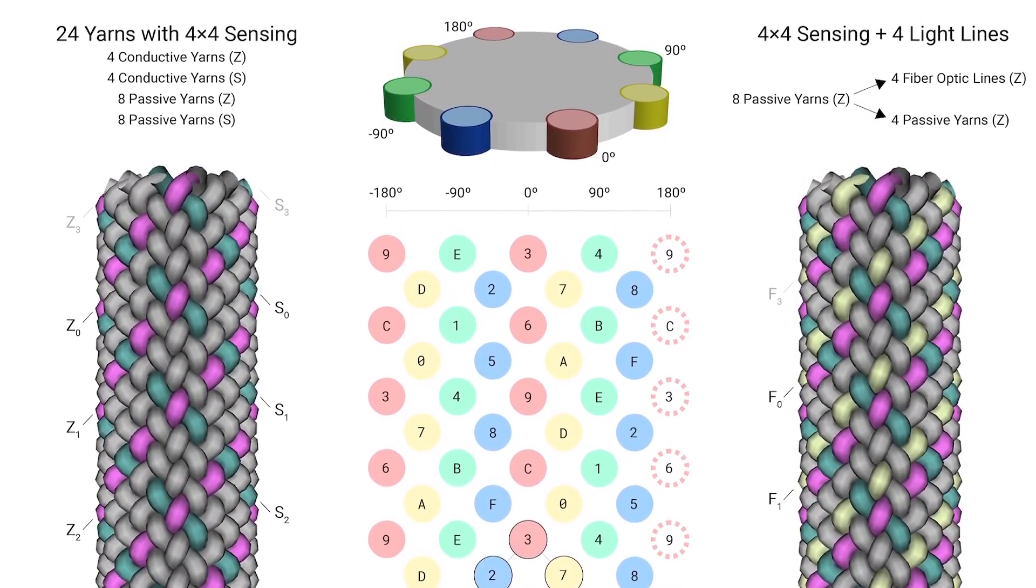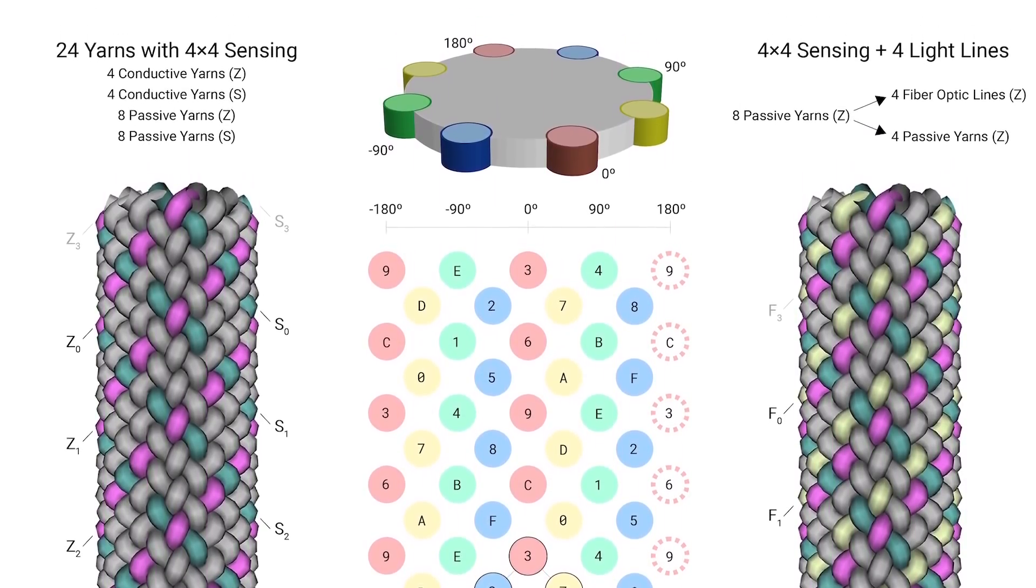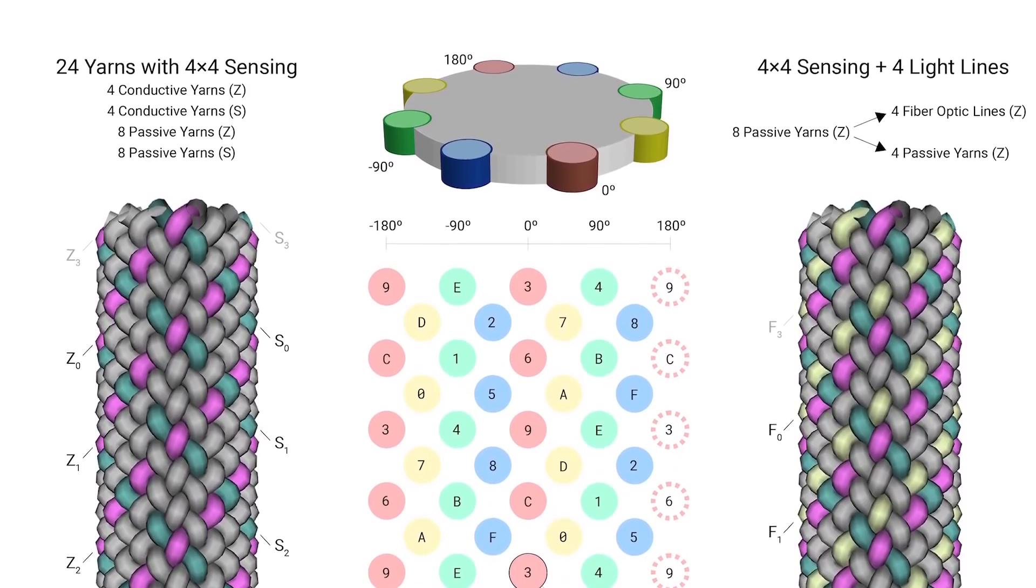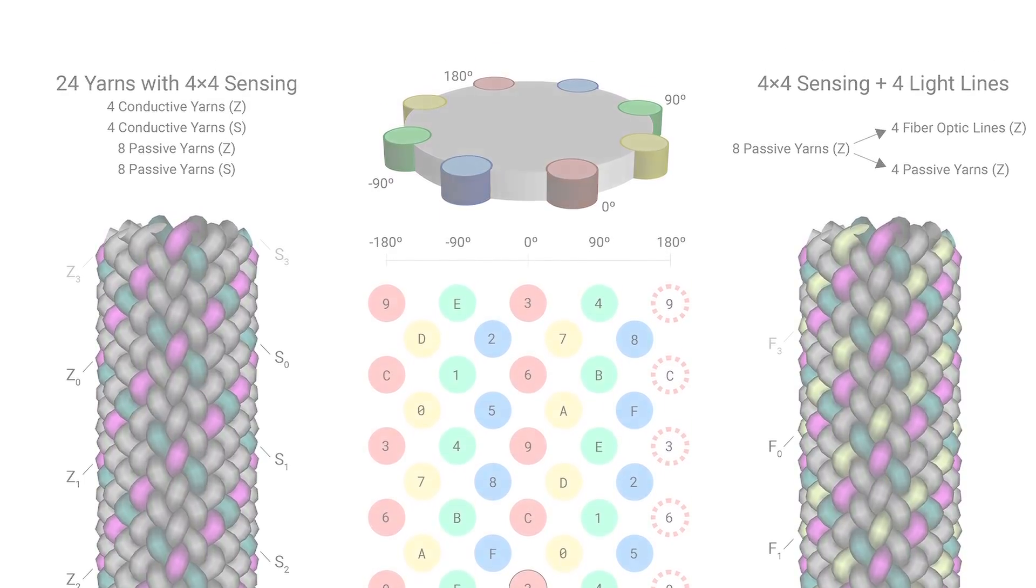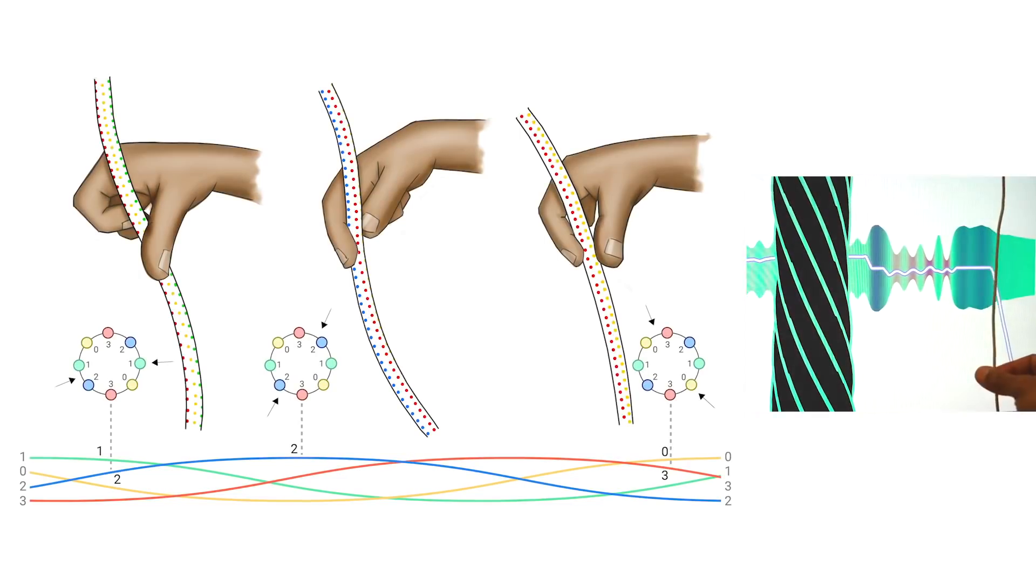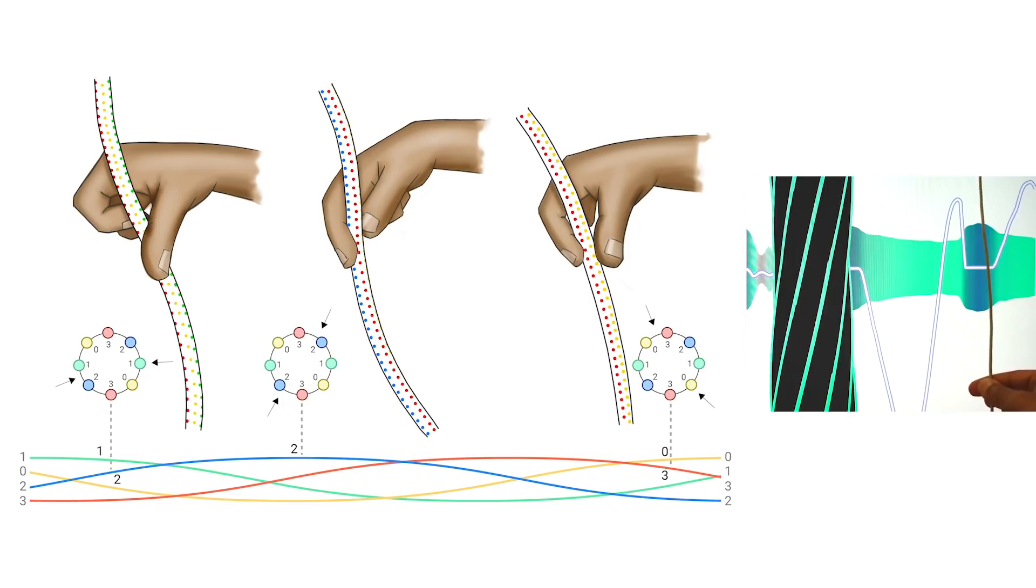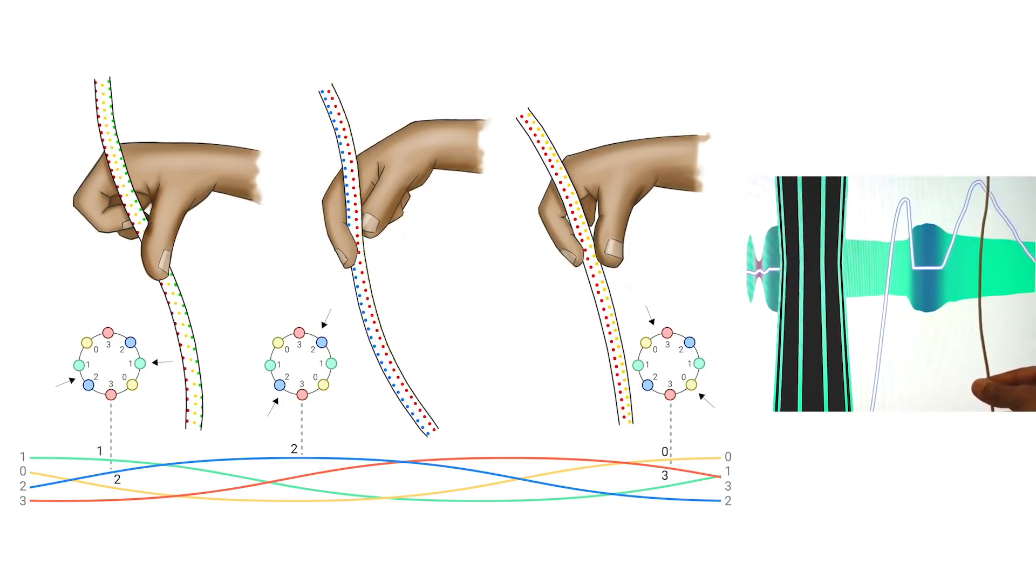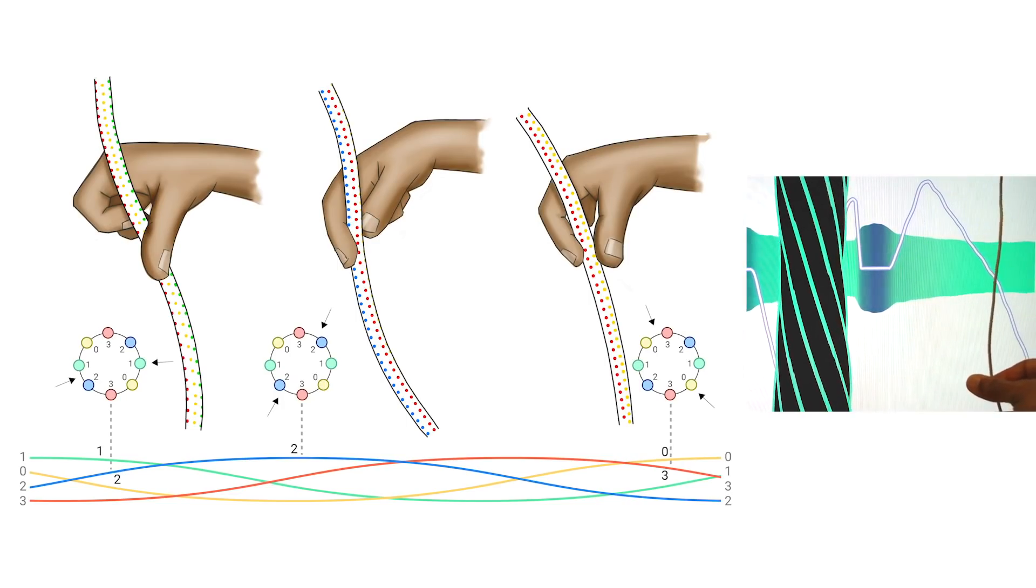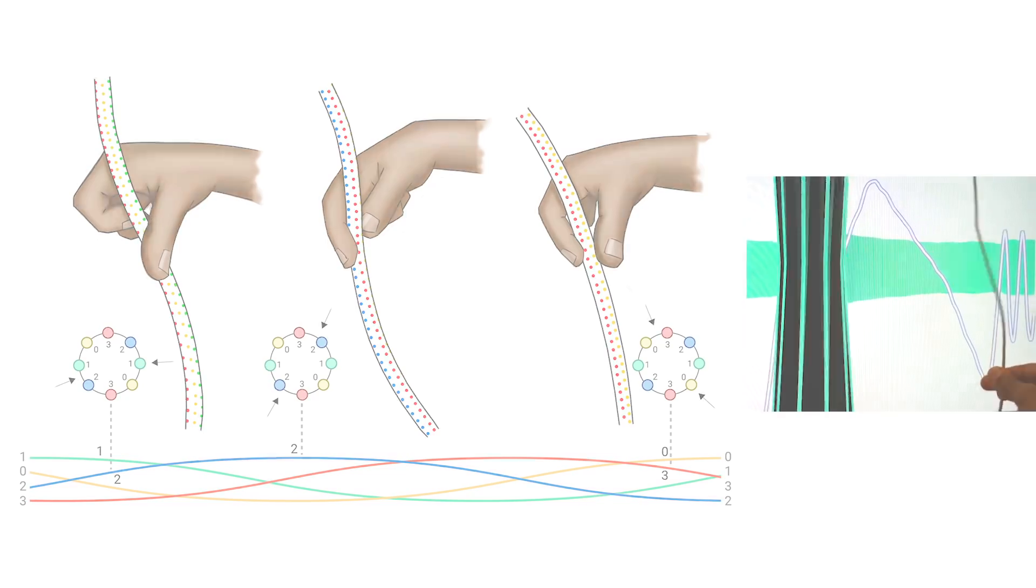When the user manipulates the cord, the capacitive coupling between the threads running in the S and Z directions is modulated by the user's fingers and can thus be used to determine the type of interaction that occurred across the matrix. Interactions can be sensed anywhere on the cord since the braided pattern repeats along the cord's full length.